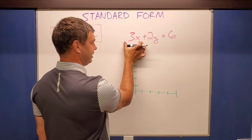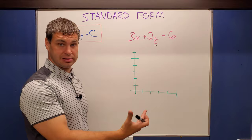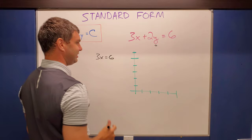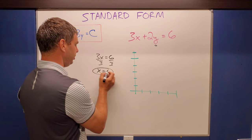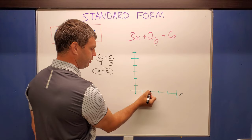if I want to find what the x-intercept is, if I plug in zero for y, well, two times zero is gonna be zero. So that kind of just cancels. And then what I'd be left with is three x equals six. If I solve for that, divide both sides by three, x is gonna equal two. And so on my x-axis, I could, for this equation, put a dot at two on the x-axis.